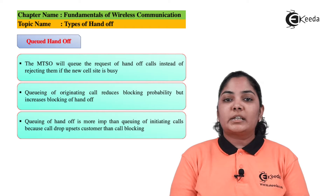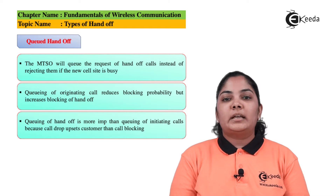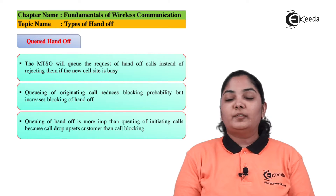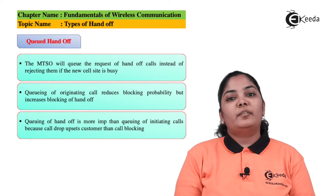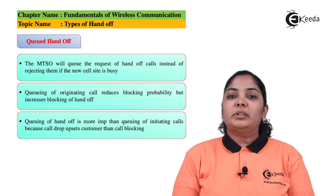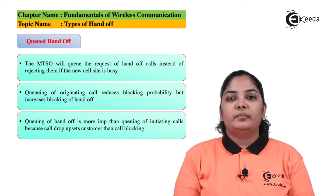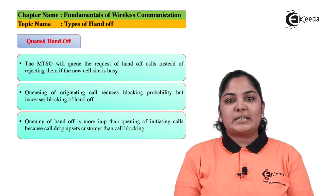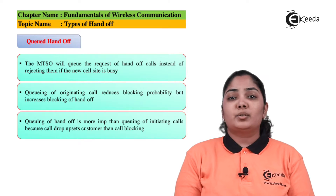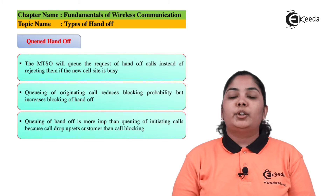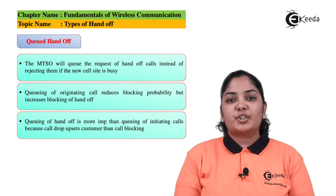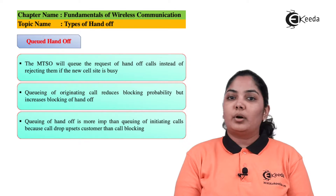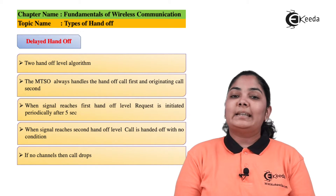The next handoff type is queued handoff. In queued handoff, a queue is created for handoff requests, which are then handled one by one. Queuing of originating calls reduces the probability of a call being blocked, but it increases the probability of handoff being blocked — because all channels in the cell remain busy, leaving no channel available for handoff requests. Queuing of handoffs is more important than queuing of originating calls, since users become more frustrated when a call is dropped than when a new call cannot be made.